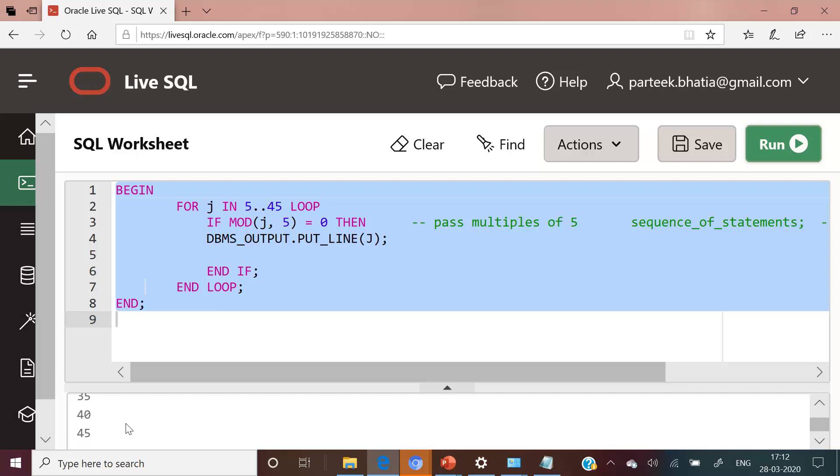If we wish to have a step value of 3, we can modify this code from 1 to let us suppose 45 and here we need to change this mod 3.